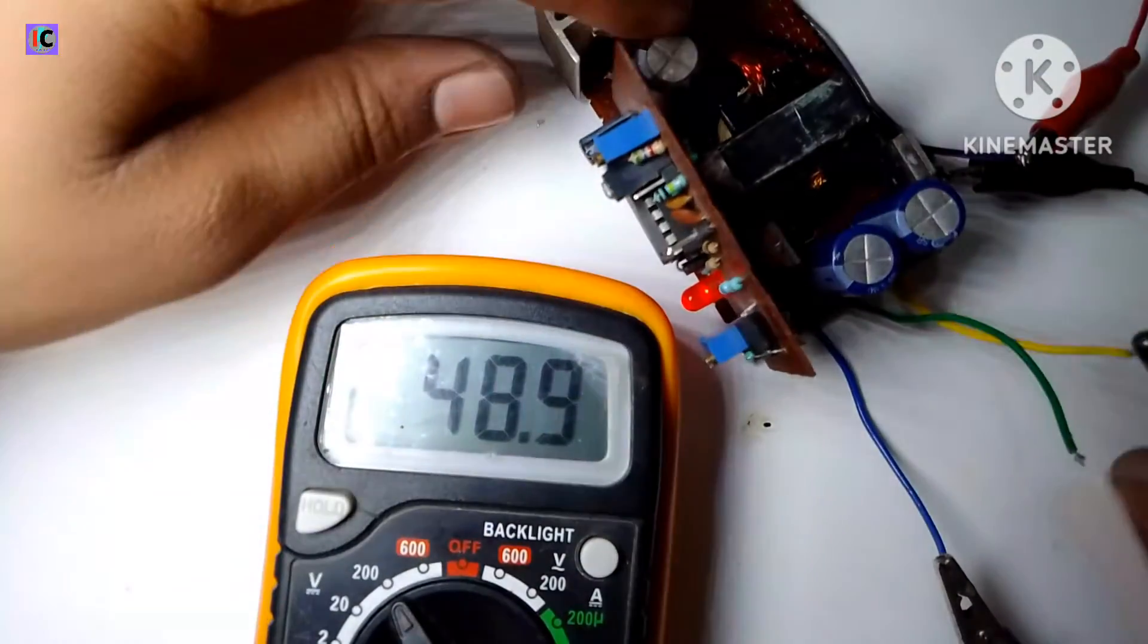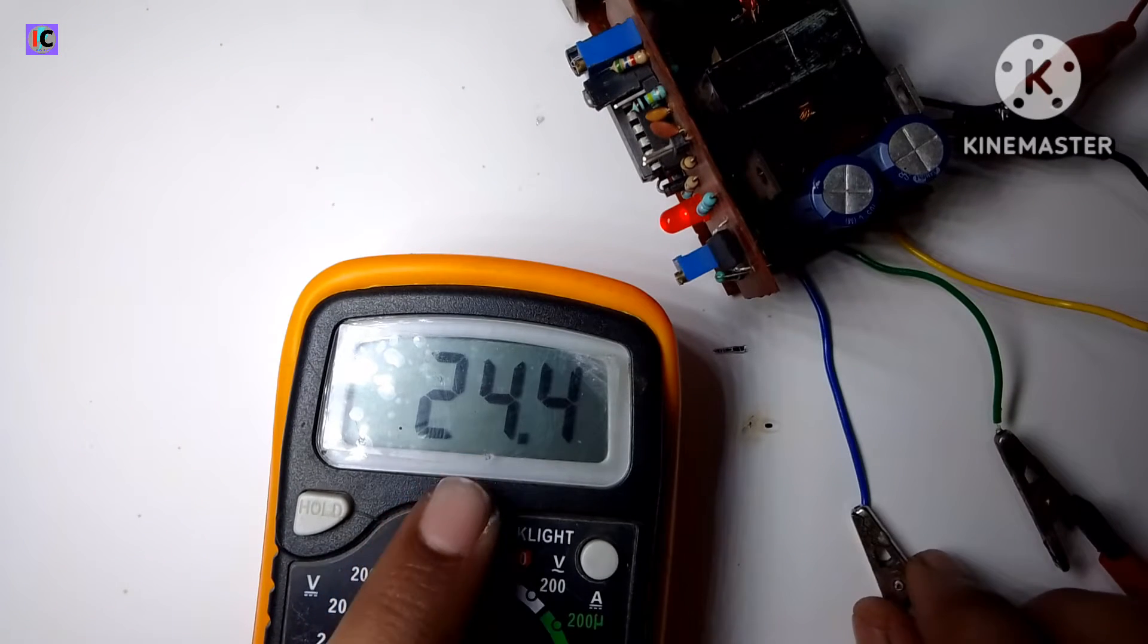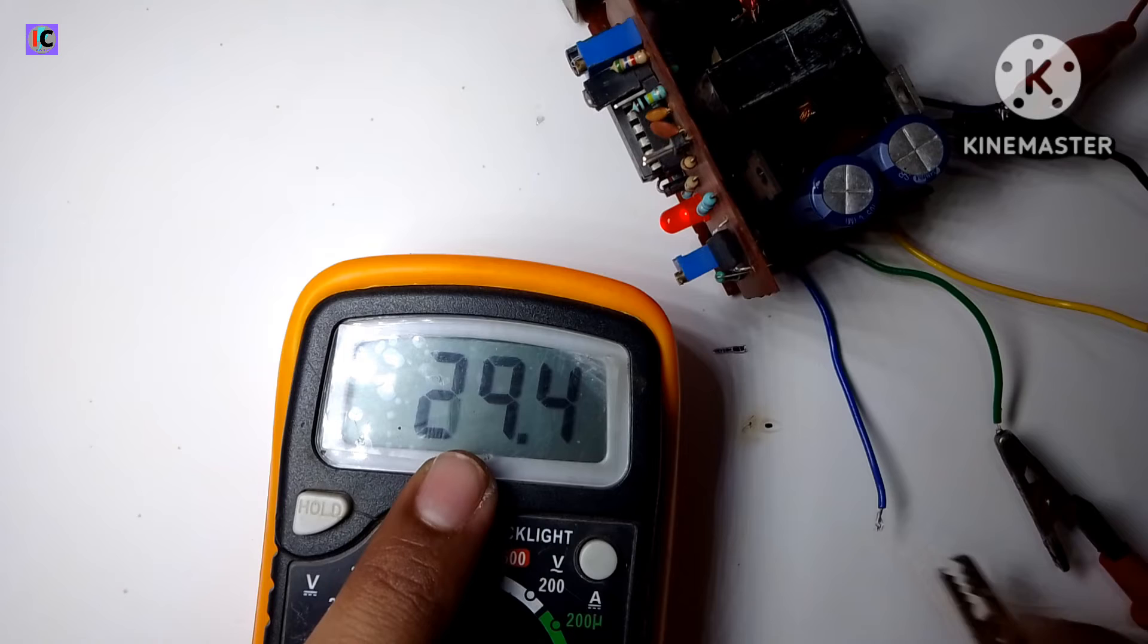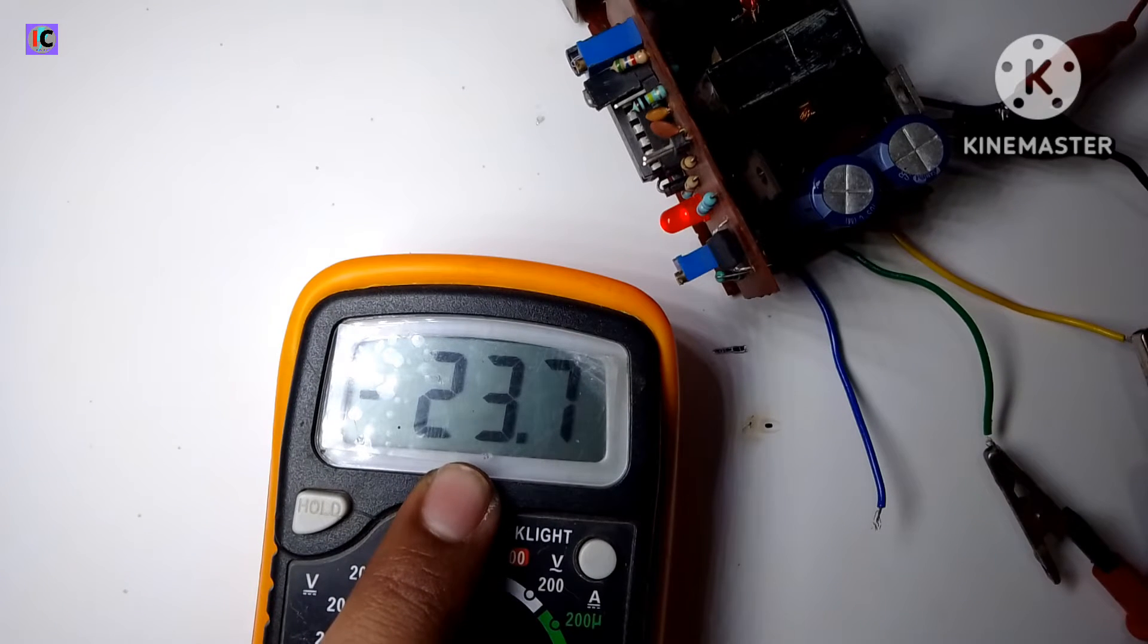When I connect the positive terminal of the multimeter to the ground portion, one side is plus 24 and the other is minus 24 volts, which is very stable at the load case.